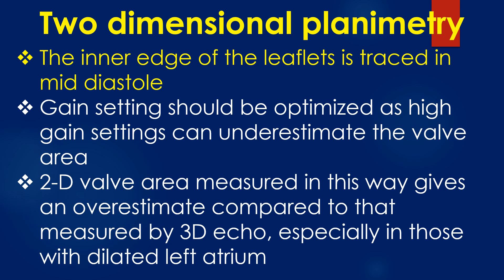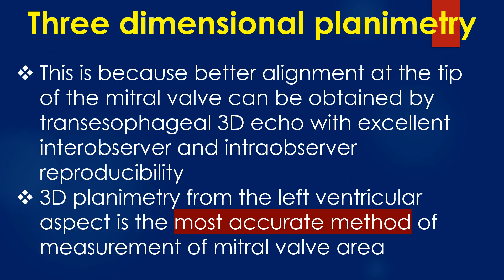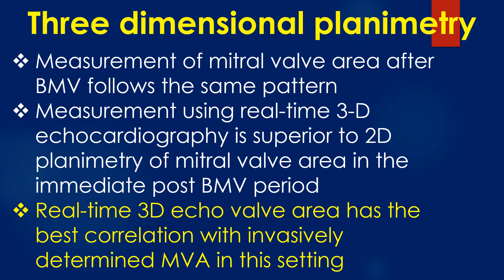Two-dimensional valve area measured in this way gives an overestimate compared to that measured by three-dimensional echocardiography, especially in those with a dilated left atrium. This is because better alignment at the tip of the mitral valve can be obtained by transesophageal 3D echo with excellent inter-observer and intra-observer reproducibility. 3D planimetry from the left ventricular aspect is the most accurate method of measuring mitral valve area. Measurement using real-time 3D echocardiography is superior to 2D planimetry in the immediate post-mitral valvotomy period, and has the best correlation with invasively determined mitral valve area in this setting.